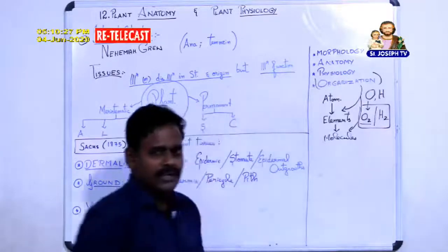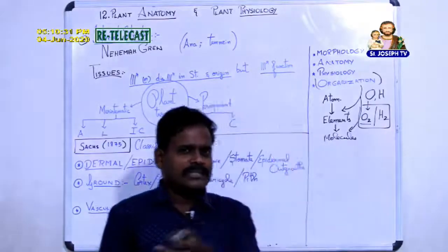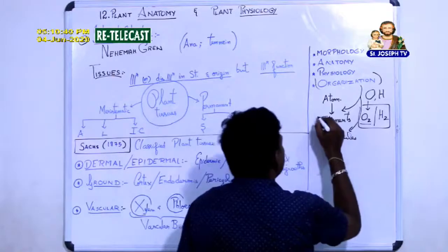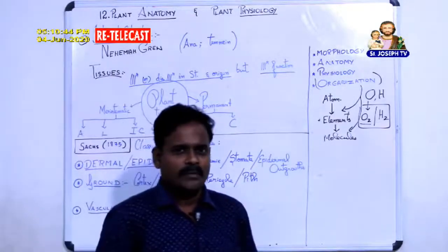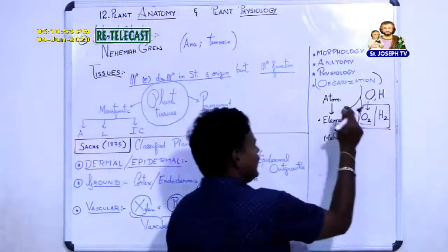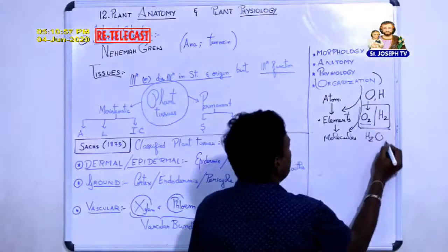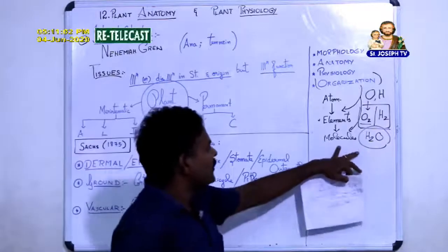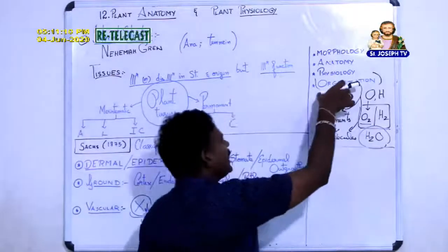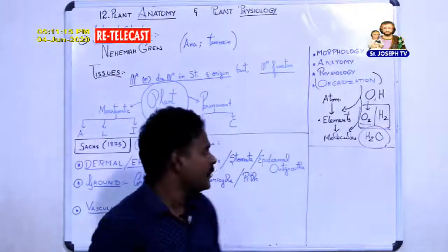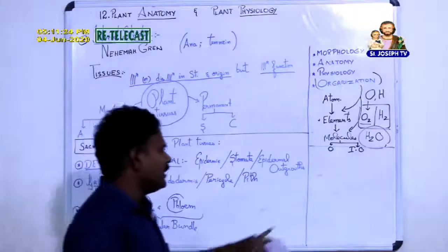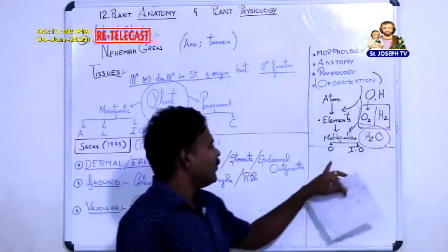To satisfy the octet rule, you find organization in chemicals: O₂ or H₂ are formed by atoms bonding together. These are found in the periodic table. When different elements combine, they form molecules. This is chemical-level organization: atom → elements → molecules. Molecules can be classified into two types: organic and inorganic.